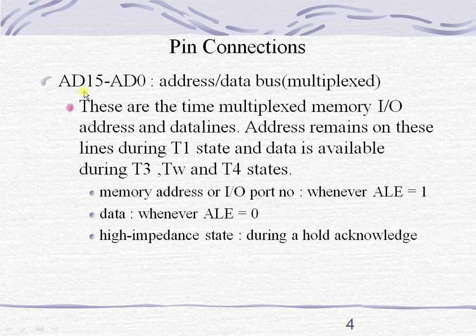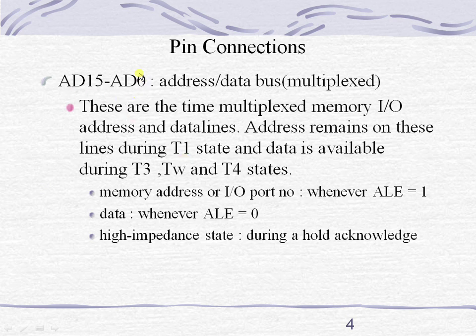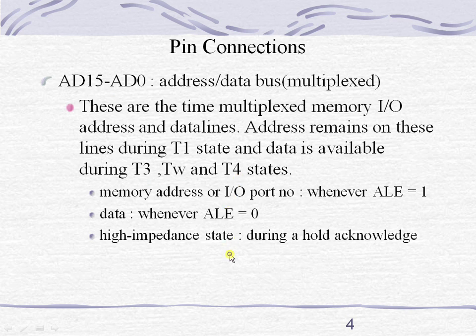Whenever the processor wants to communicate with any device, it initially sends the address of that device during the T1 state of the clock cycle. The clock signal totally contains four states, not including the wait state. During T1, the processor sends the address using the multiplexed lines. During T2, the multiplexed lines are in a high impedance state as they are transitioning from address to data lines. During T3, T4, and the TW wait state, the data is transferred with the help of these multiplexed lines.